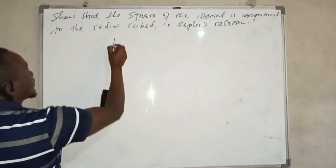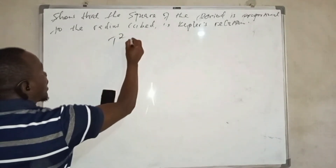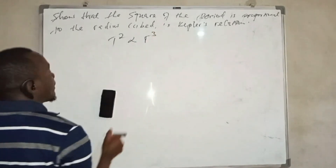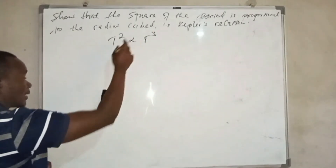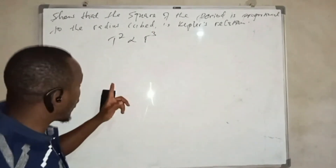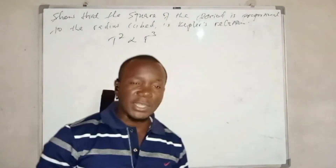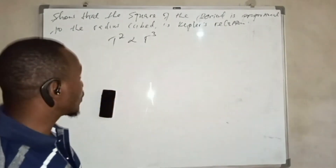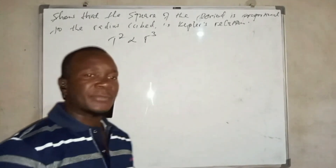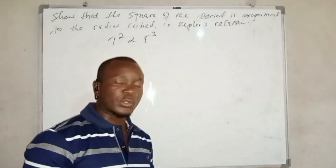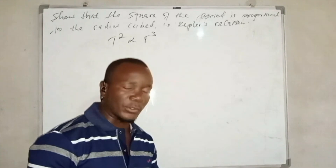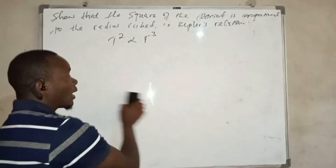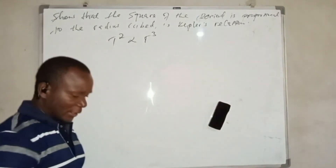We are going to show that period squared, T², is proportional to r to the power of 3 — that is, radius to the power of 3. From this point, we are going to use two concepts from the previous video: the centripetal force and the gravitational force, so as to arrive at this result.